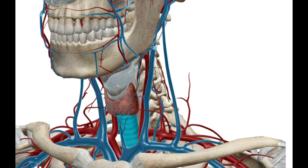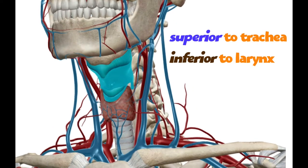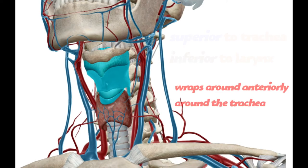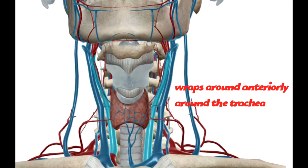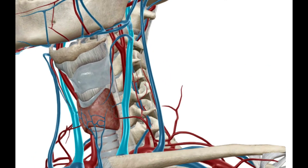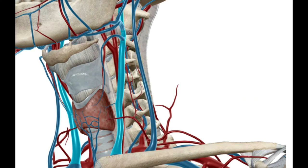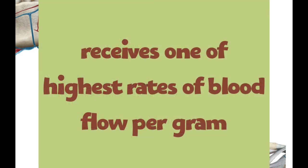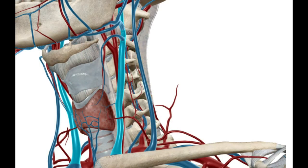Here we are at the thyroid. The thyroid is located just superior to the trachea and just inferior to the larynx. It also wraps around the trachea and lies between the common carotid arteries and the internal jugular veins.